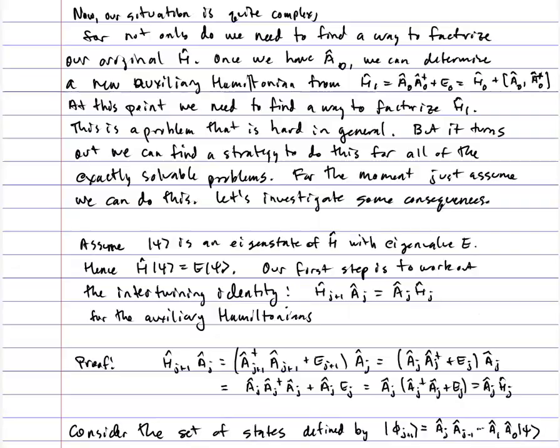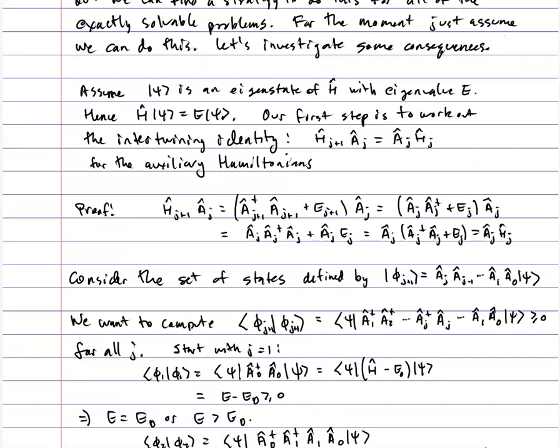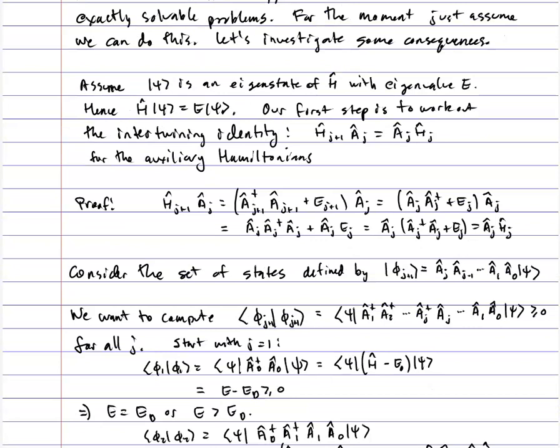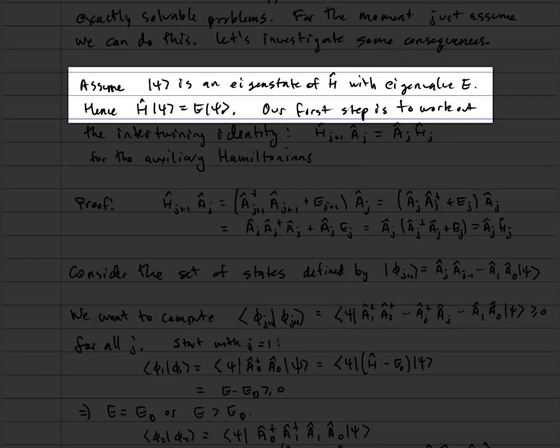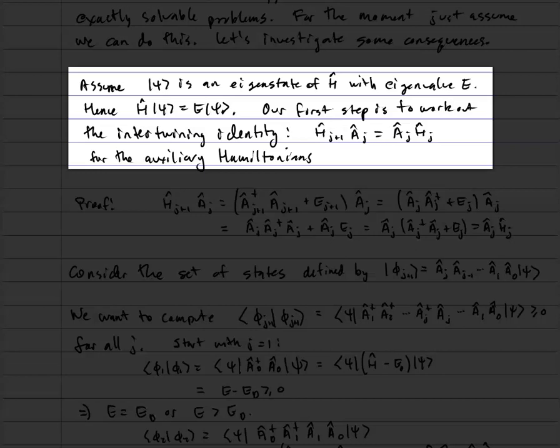For the moment, I want you to think abstractly and assume that we can work out these different factorizations, and let's investigate what the consequences are if we can do that. So let's assume that ψ is an eigenstate of H with eigenvalue e, so H|ψ⟩ = e|ψ⟩. We want to first work out what we call an intertwining identity, which says that hⱼ₊₁ acting on aⱼ becomes aⱼ times hⱼ for the auxiliary Hamiltonians.